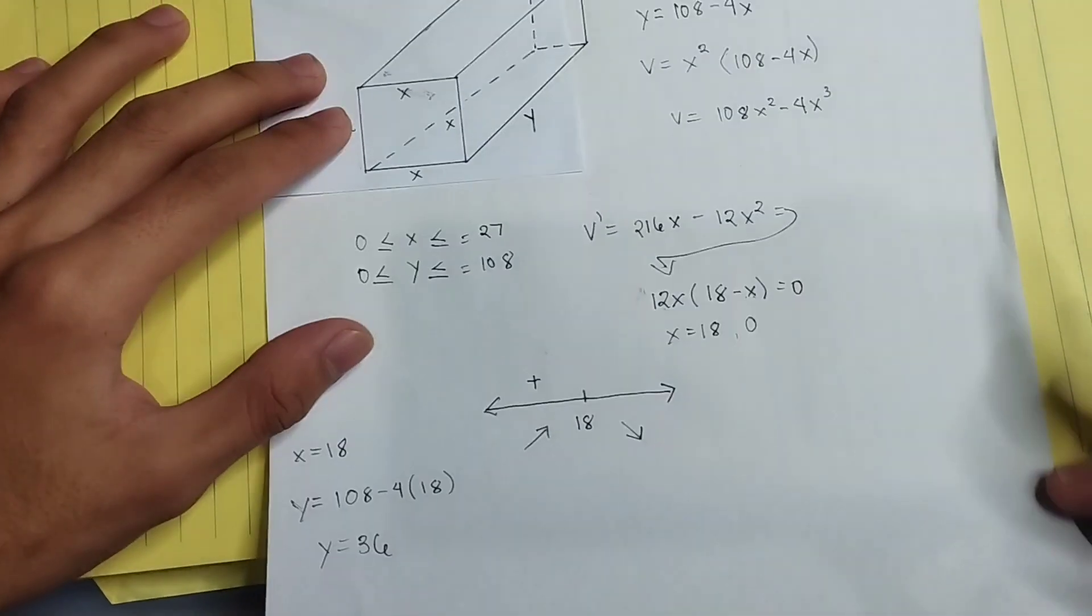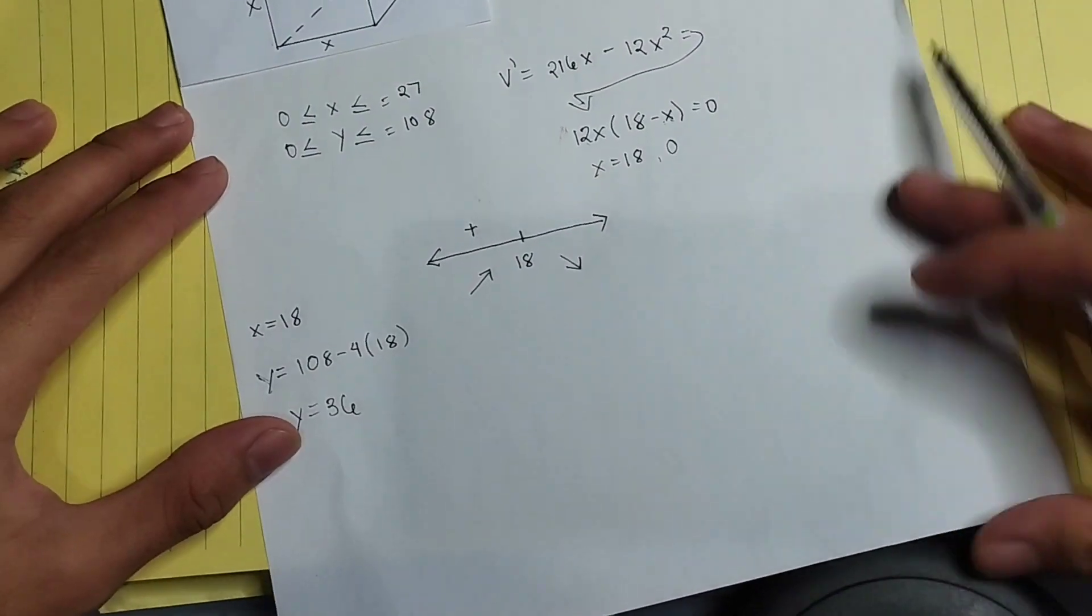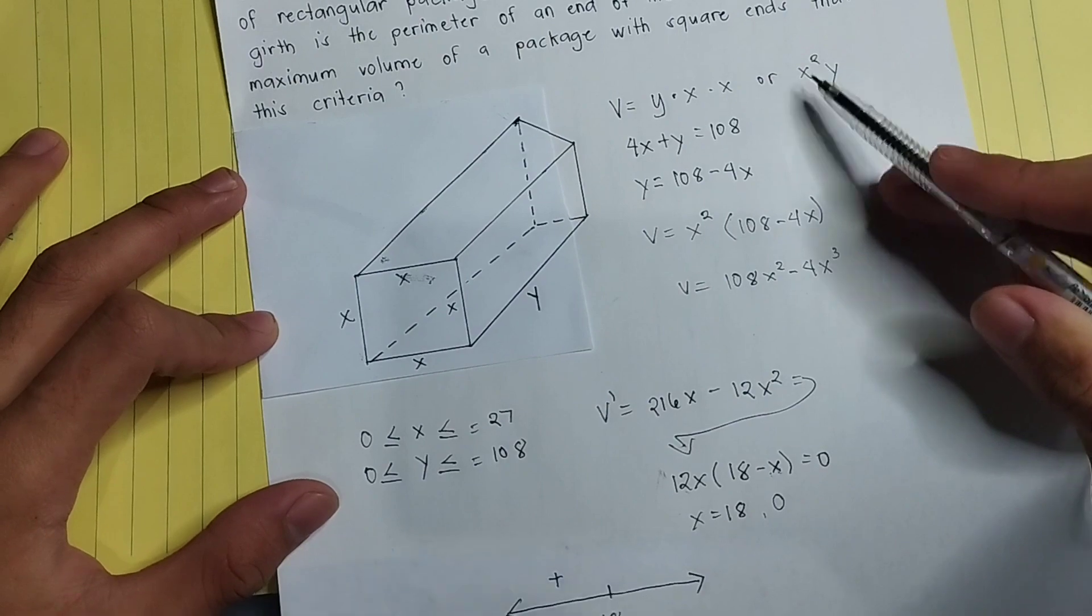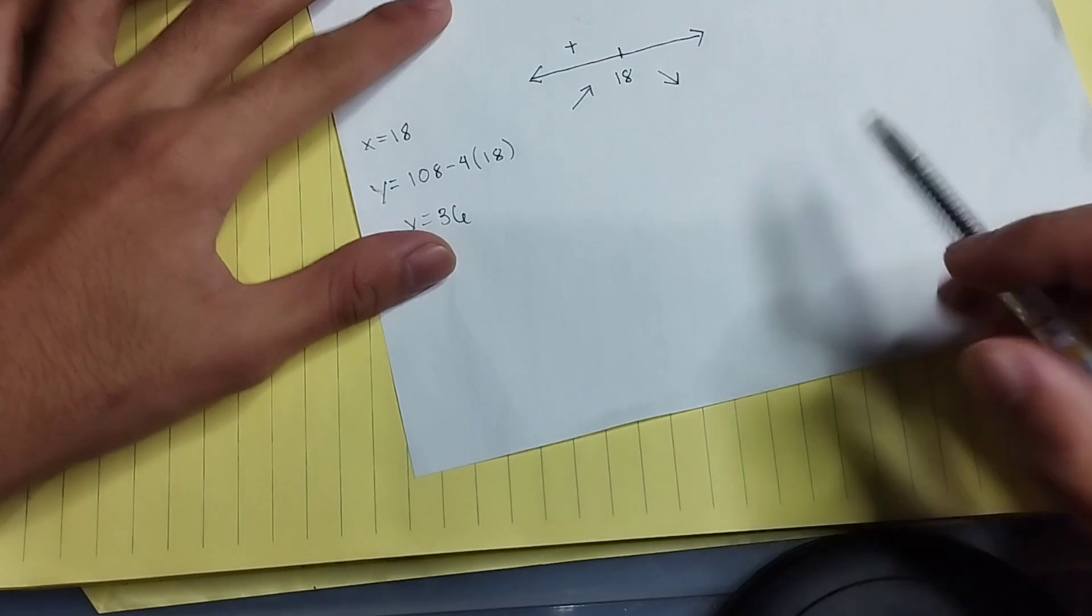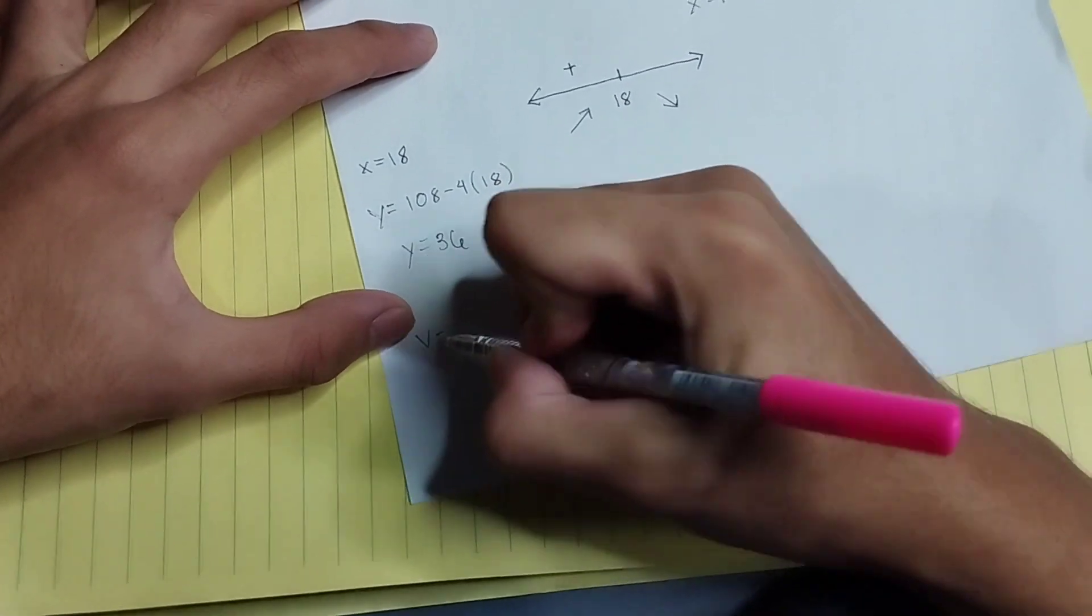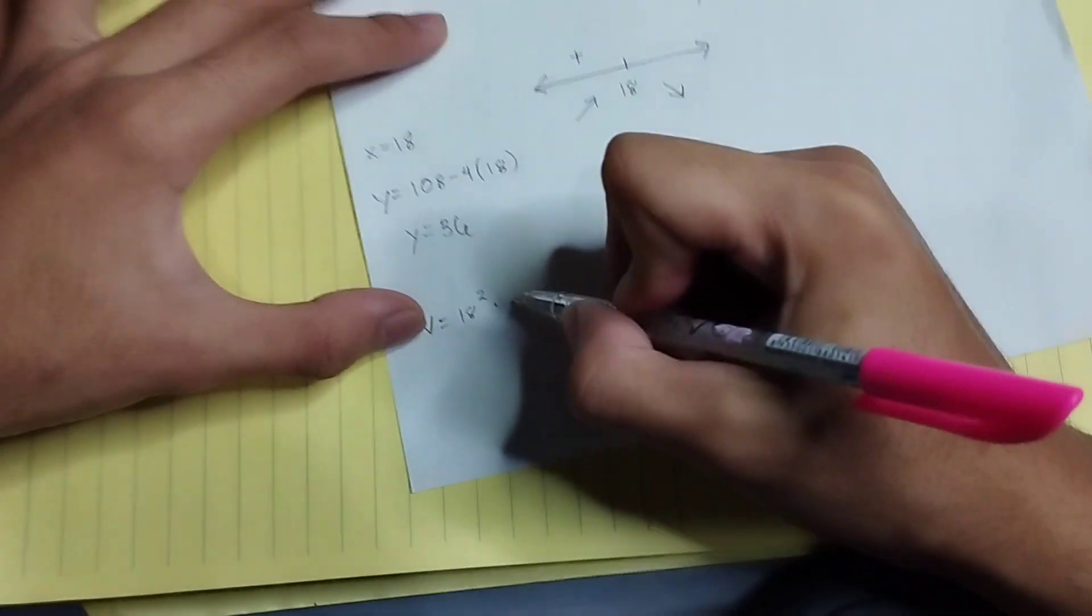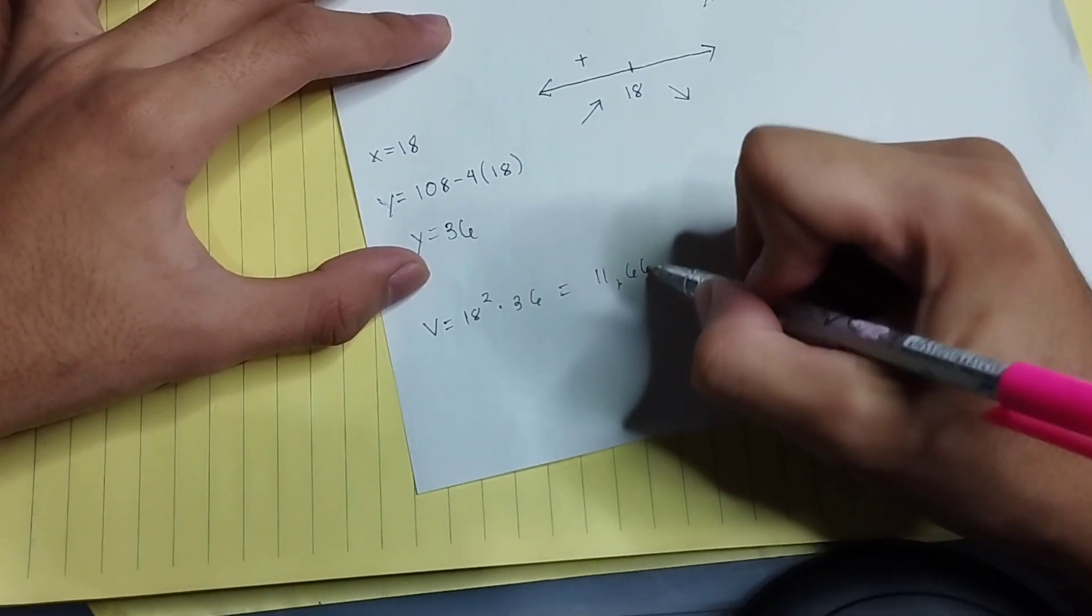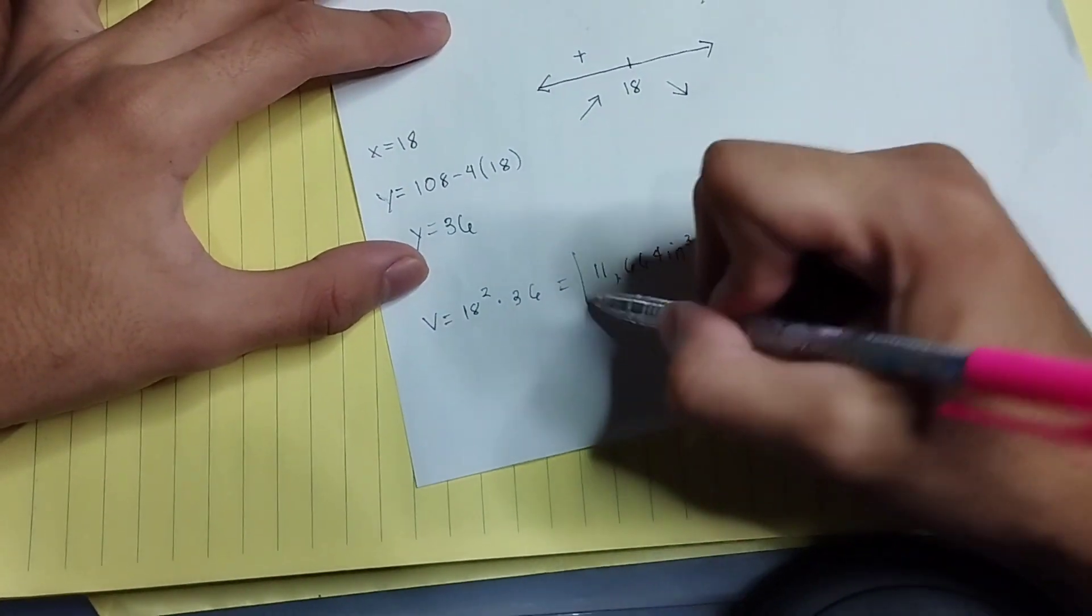And then when after we get the value of y equals 36, we can say that 36 is the maximum value, since the unit that we are finding is inches based from the given. And in order to get that, we will use the formula of the volume, which is volume equals x squared times y. Volume equals 18 squared times 36, which equals 11,664 cubic inches.